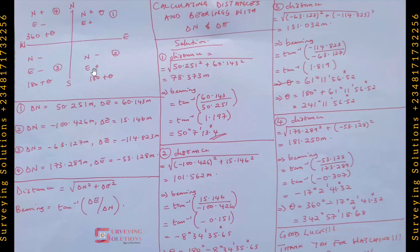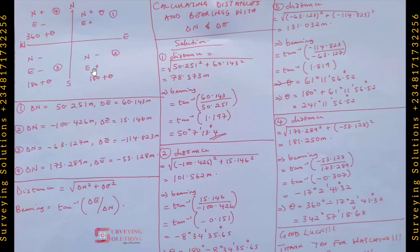We are going to show you how to use the tan inverse formula: tan inverse of your delta eastings over your delta northings, and the square root of your delta northings squared plus delta eastings squared for distance. We also have these four quadrants, sometimes called ACTS.